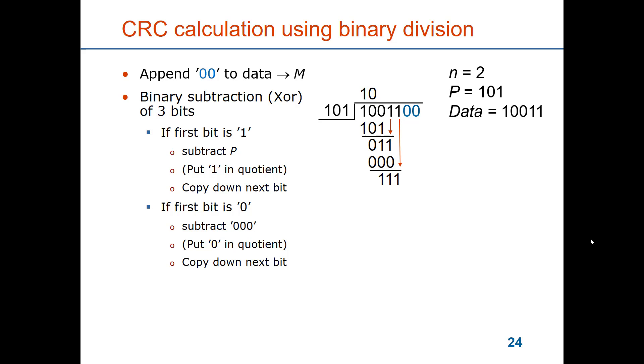And we copy down another bit so we have 111. Now the first bit, the most significant bit, is a one so we get 111 exclusive or with 101, and we get now 100.